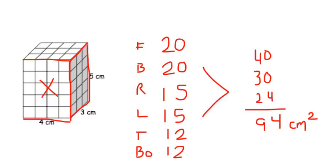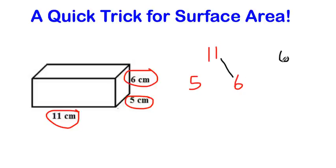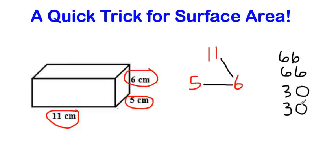There is a quick trick that's a little bit quicker for figuring out the areas of each side. Take your three dimensions — 11, 5, and 6 — and set them up in a triangle formation. Go around the triangle multiplying the numbers: 11 times 6 is 66, and since it's the area for one side, there will be two sides with an area of 66. Continue around: 6 times 5 is 30, so we duplicate that for the other side. And lastly, 11 times 5 is 55, and another side is going to be 55. Then we add up all those sides.